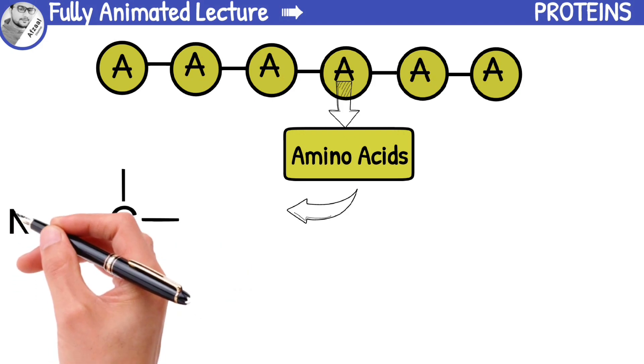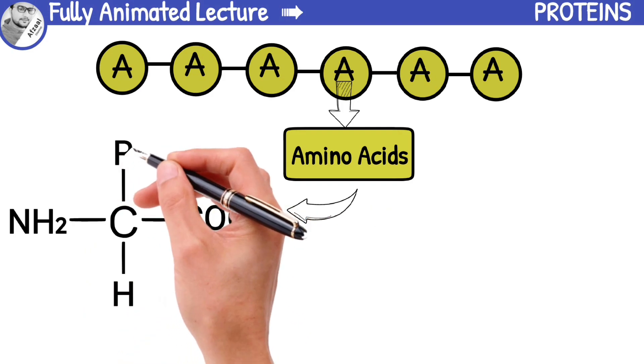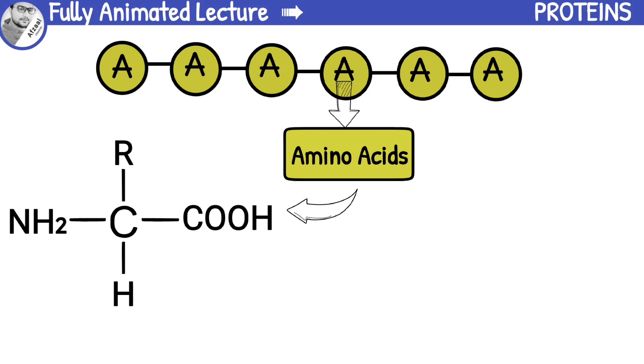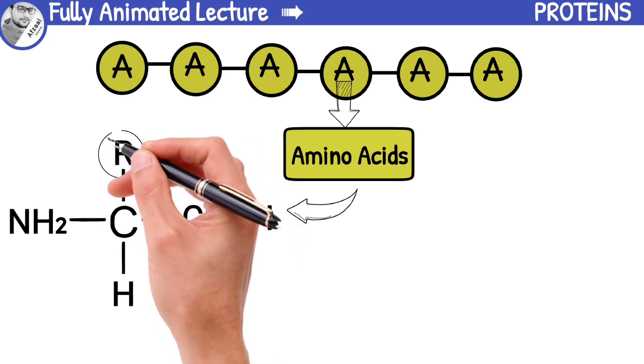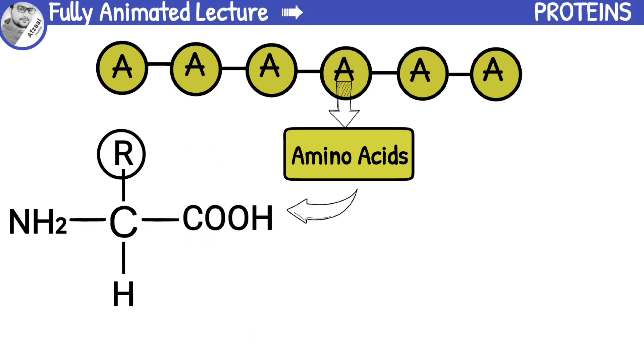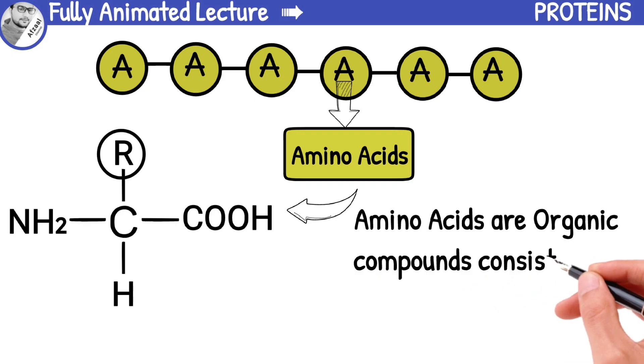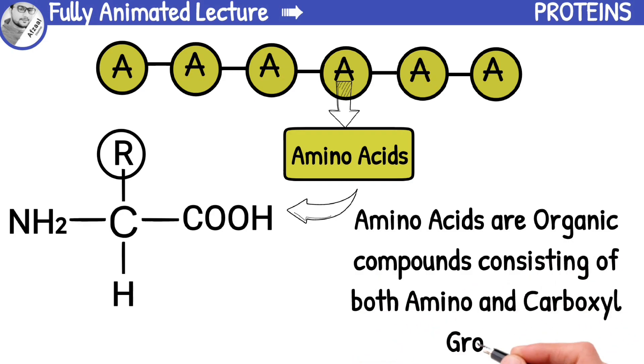These four groups include an amino group, a carboxyl group, a hydrogen atom, and a side chain represented by R. The side chain makes each amino acid unique and determines its specific properties. So amino acids can be defined as organic compounds consisting of both amino and carboxyl groups.